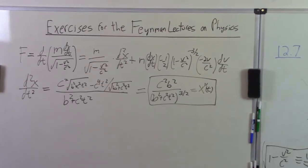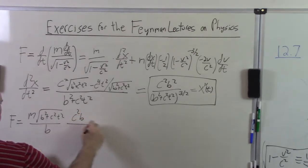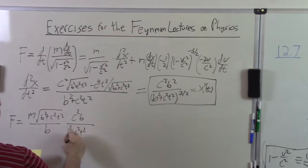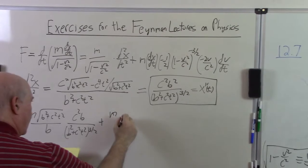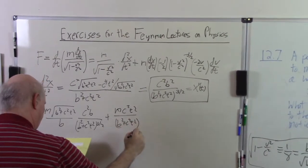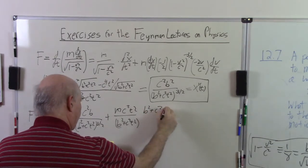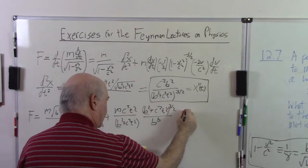So using what's in the three boxes and substituting in this force equation, I'm going to get f is equal to m c squared, b squared plus c squared, t squared, over b, c squared, b squared plus c squared, t squared, to the three halves, plus m, c squared, t squared, divided by b squared plus c squared, t squared, times b squared plus c squared, t squared, to the three halves, over b cubed. This is all routine calculus and algebra.